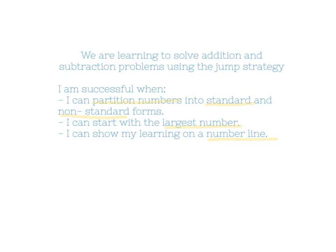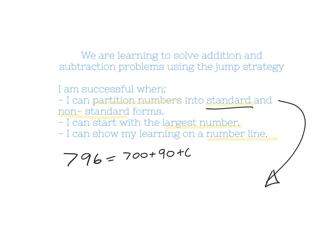To be successful you also need to understand the success criteria. When you partition numbers, if I have the number 796, the standard form is 700 plus 90 plus 6. The non-standard form of 796 would be, for example, 700 plus 96, or 790 plus 6. Those are two different non-standard forms of the same number.